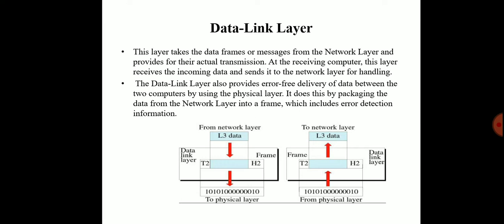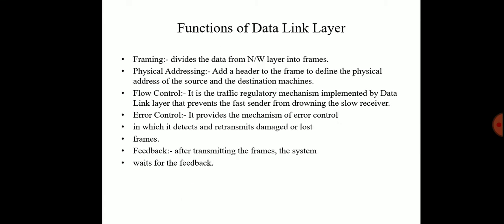We see the block diagram. The physical layer is used to the network layer. The data will be transferred from one incoming frame to another frame. Now, the functions of the data link layer. The first one is framing: it divides the data from the network layer into frames.